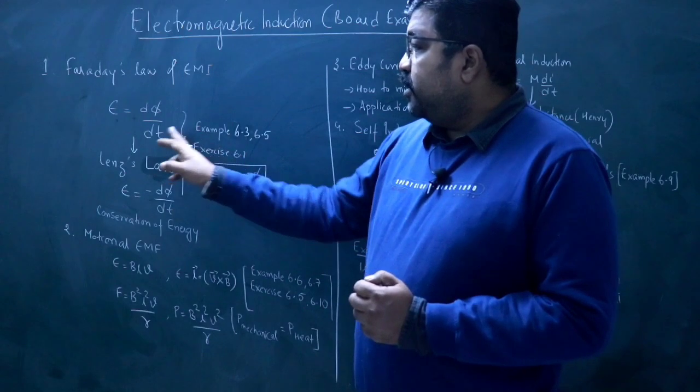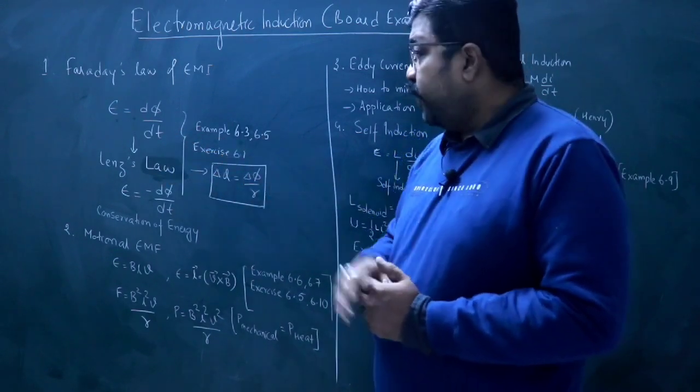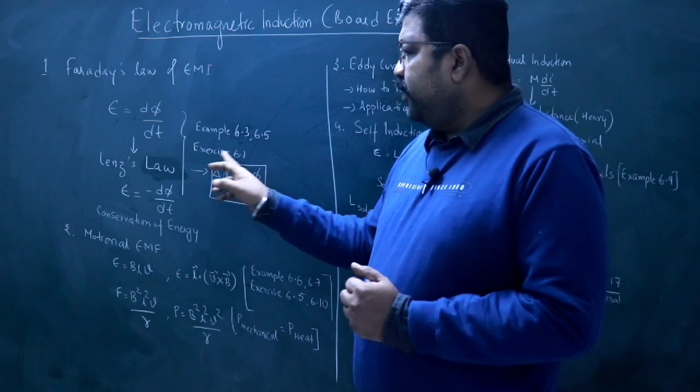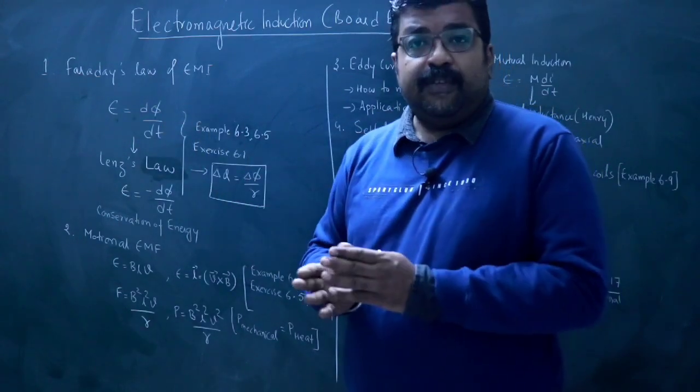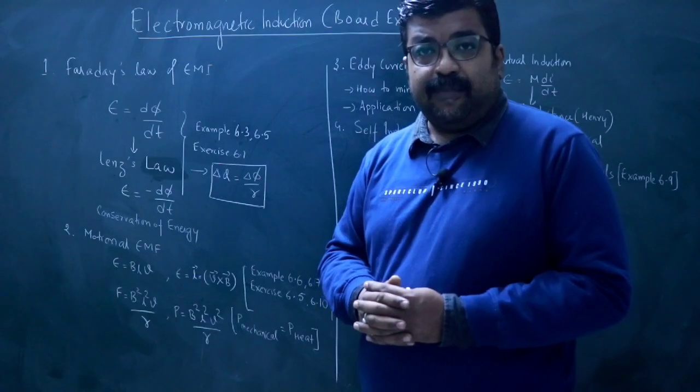You can see an example here. For example, 6.3, 6.5. In exercise, there is a question. The law that was given to you, that EMF is directly proportional to the rate of change in magnetic flux.